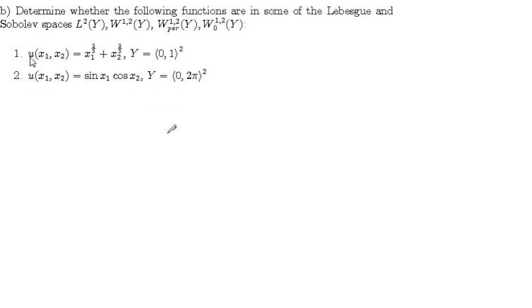The function we are going to consider is the following: u(x₁,x₂) = x₁^(2/3) + x₂^(2/3). In this first case, Y is a cell, in fact a square, which is the unit square from 0 to 1 squared. Then we have this function u(x₁,x₂) = sin(x₁)cos(x₂). And here Y is equal to (0,2π)². So it is a little bit larger square with side length 2π.